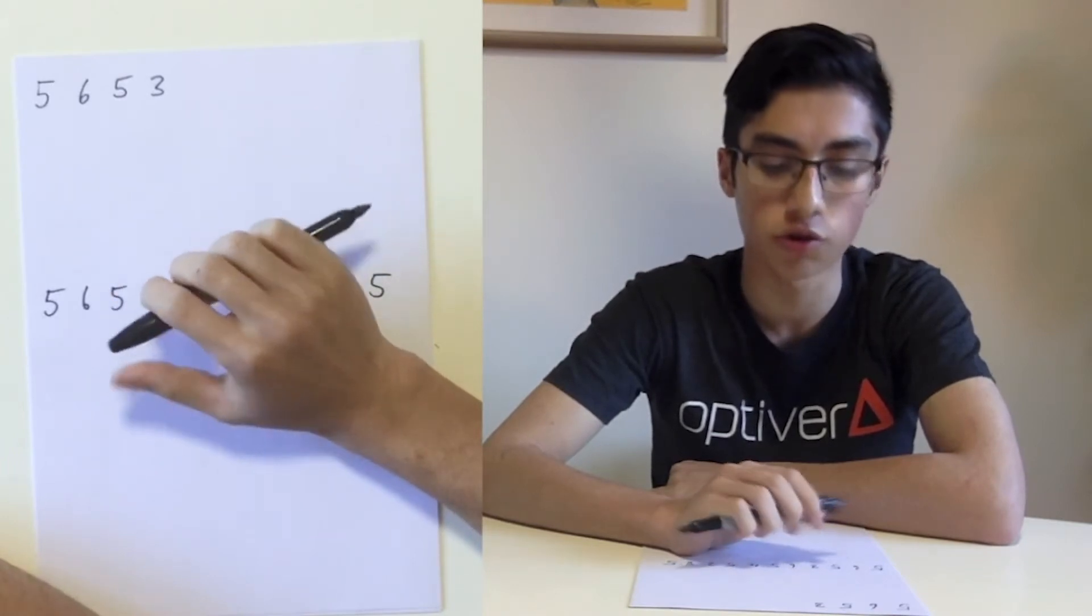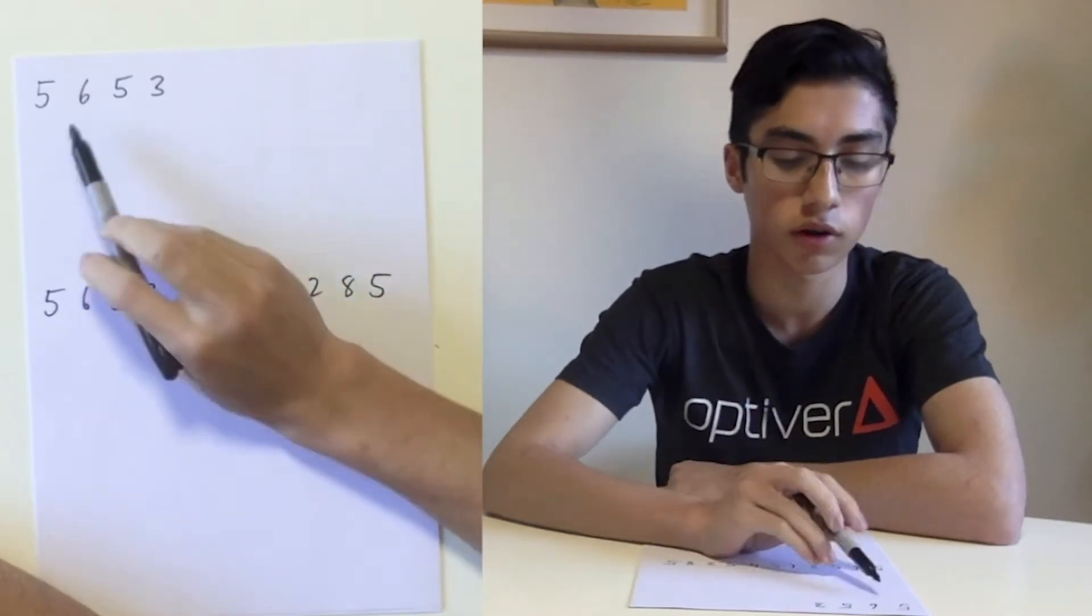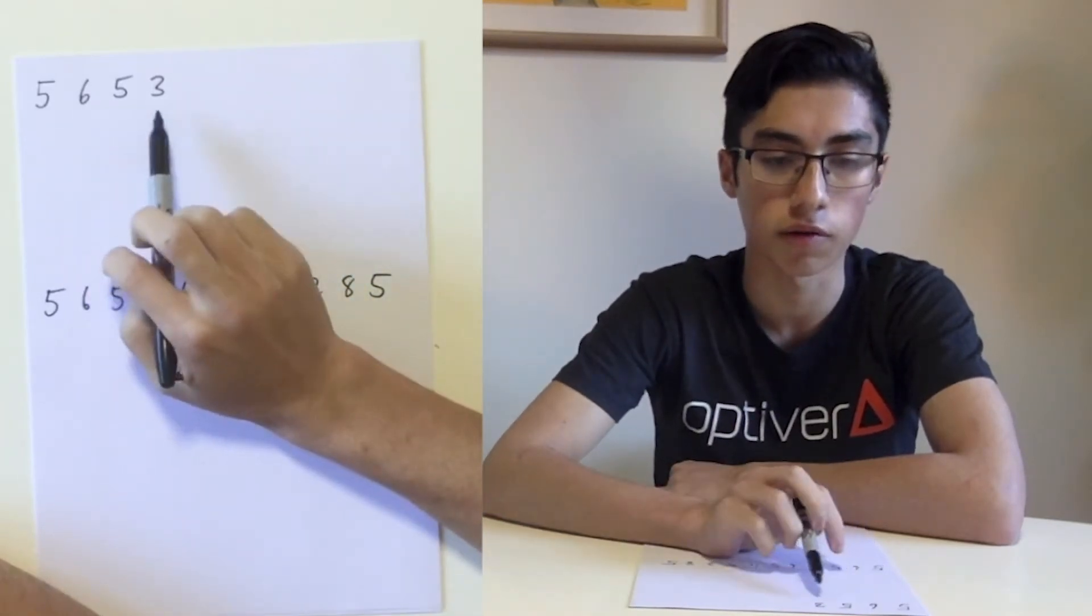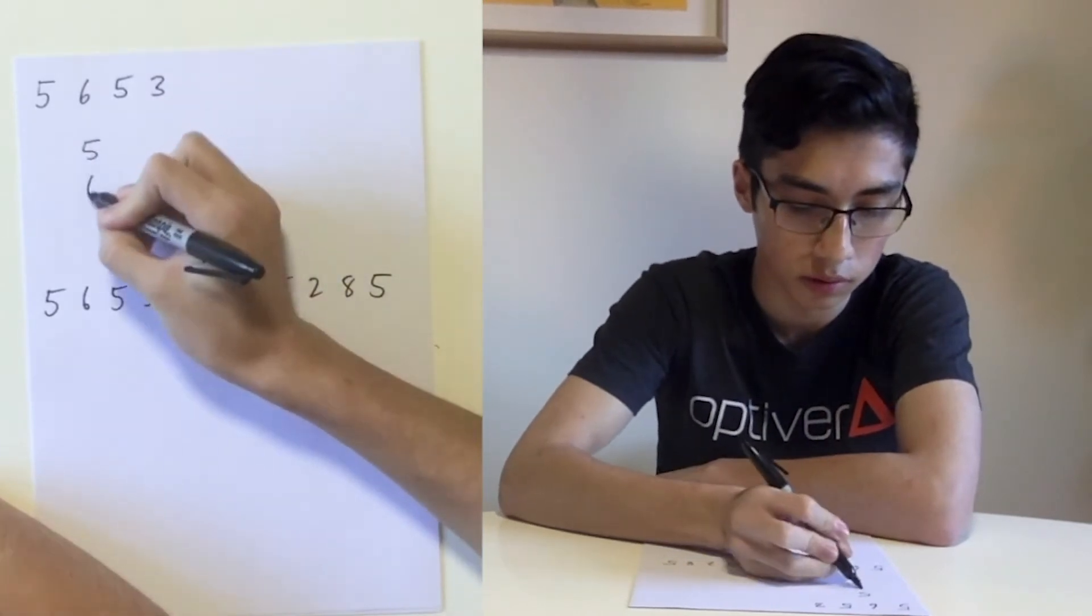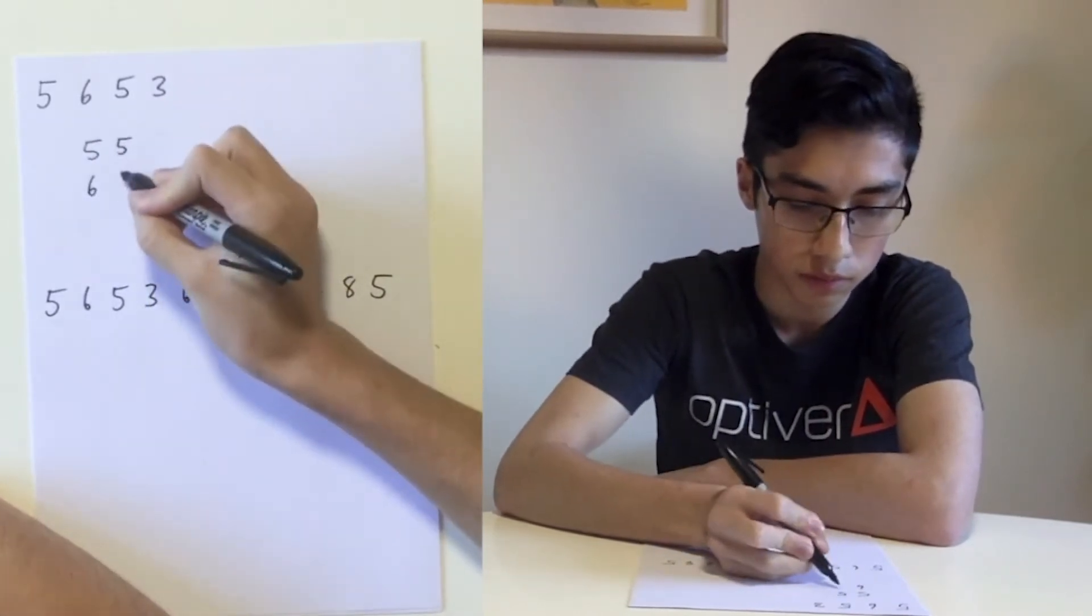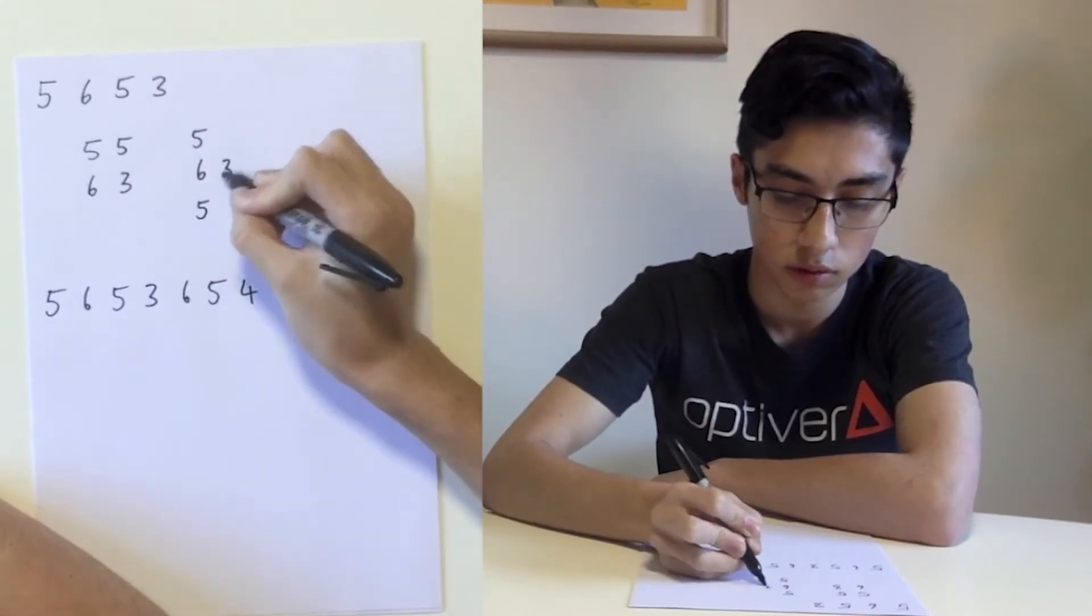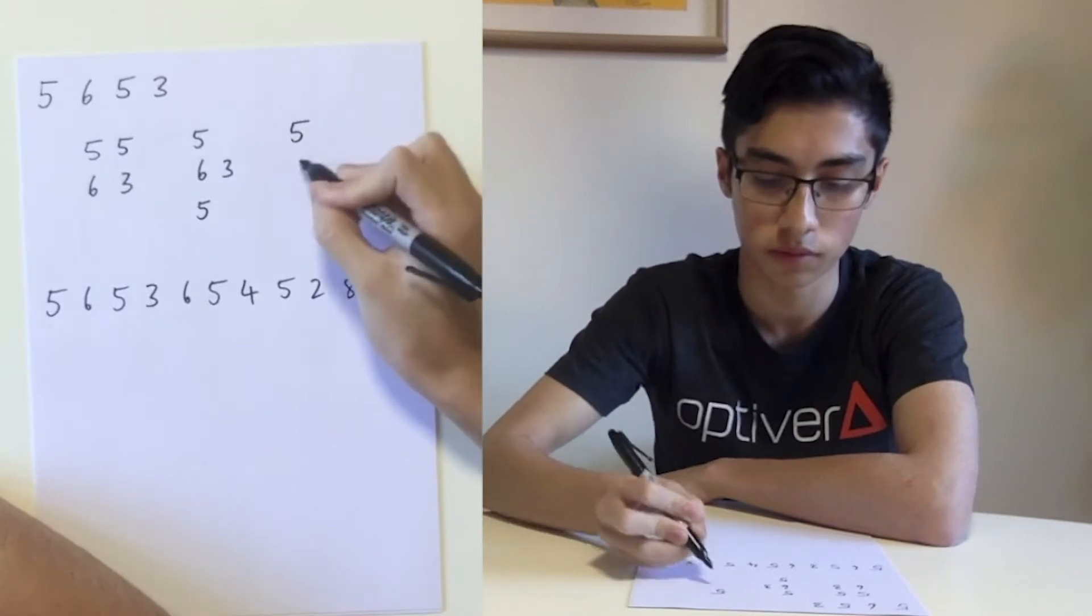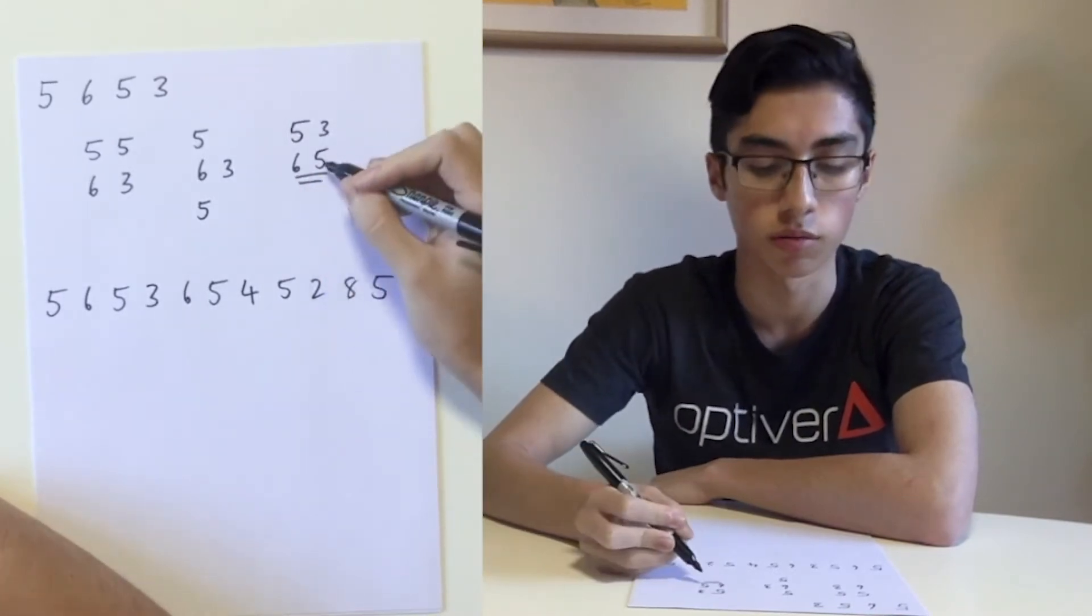However, no two adjacent numbers can have a sum of more than 10. For example, if our given sequence is 5-6-5-3, our final list could be like this, or like this, but not like this, because these two numbers add to more than 10.